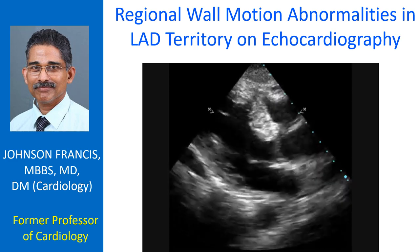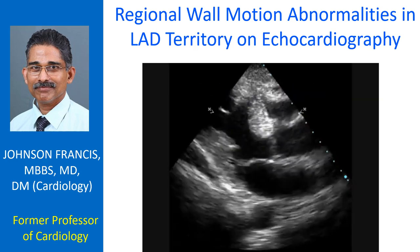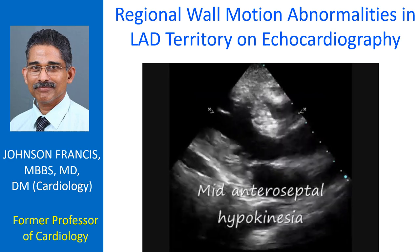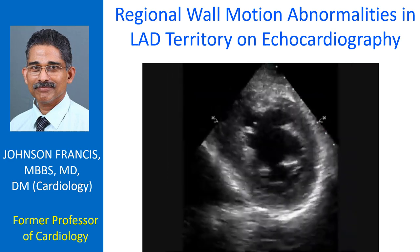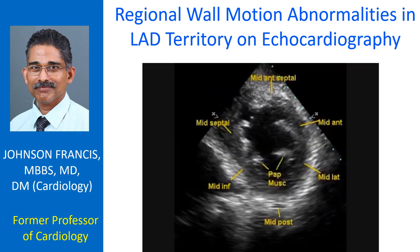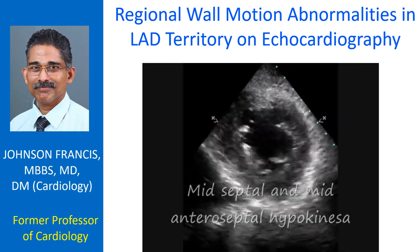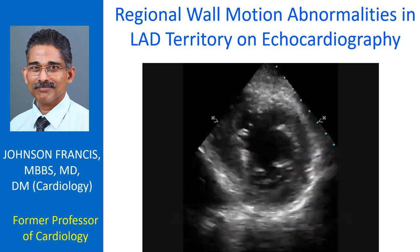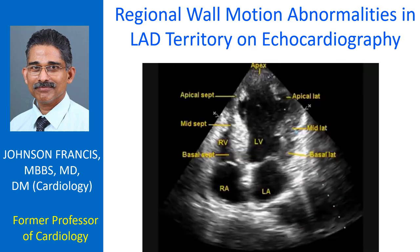2-dimensional echocardiogram in parasternal long axis, parasternal short axis, and apical four chamber views showing regional wall motion abnormalities in left anterior descending coronary artery territory.